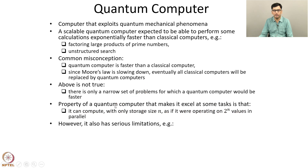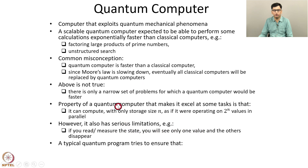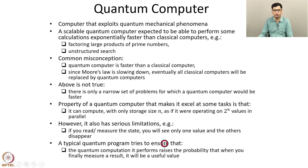But quantum computers also have some serious limitations. A state is generally the superposition of multiple binary states. The counterpart of a bit in the classical domain is a so-called qubit, and a qubit is in the superposition of 0 and 1. But if you read or measure the state of a qubit, then you will only see either a 0 or a 1, and the superposition vanishes. A typical quantum program tries to ensure that when you finally measure a result, it will be a useful value.